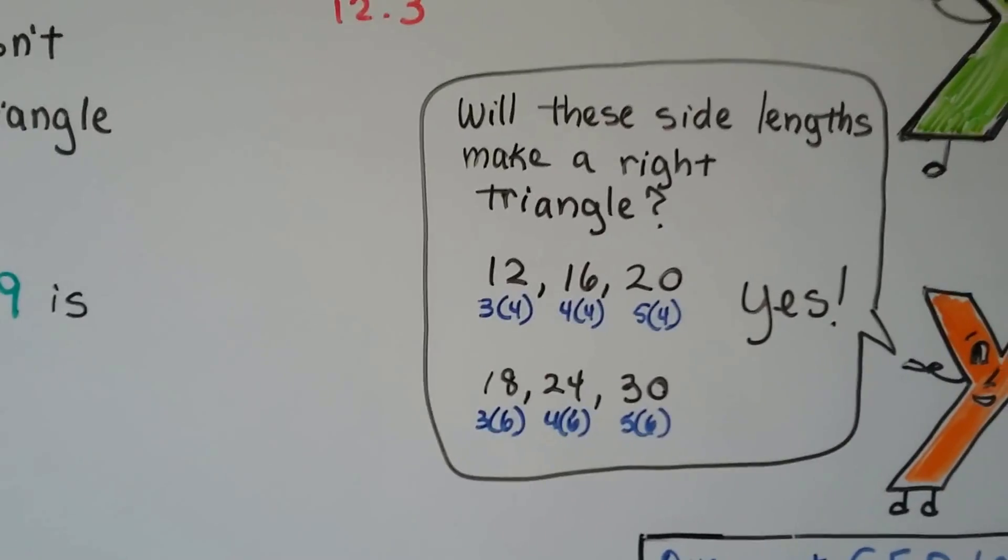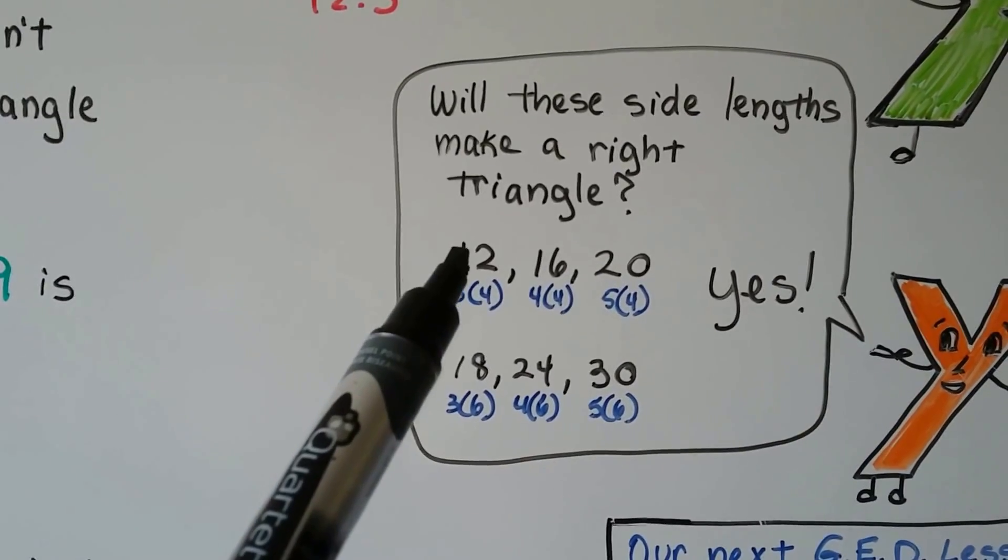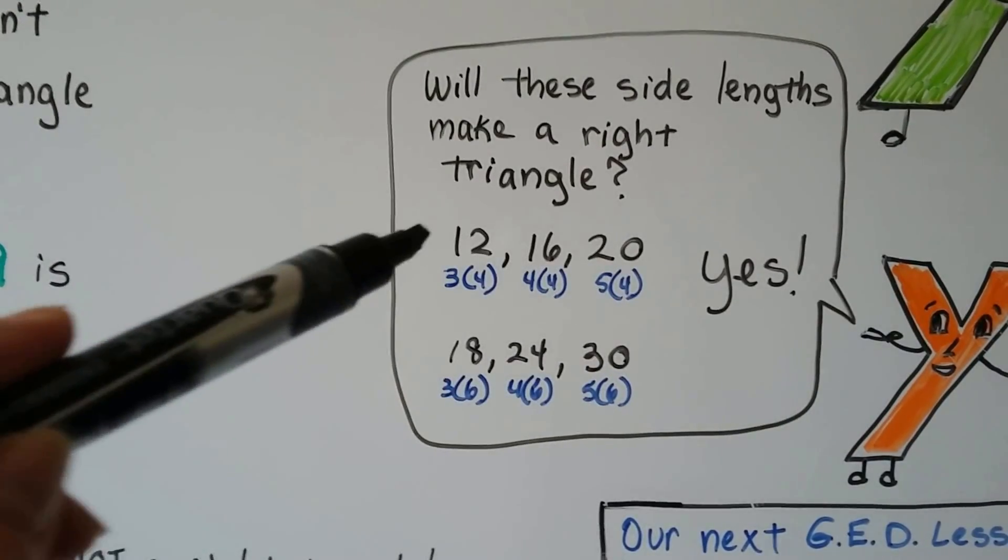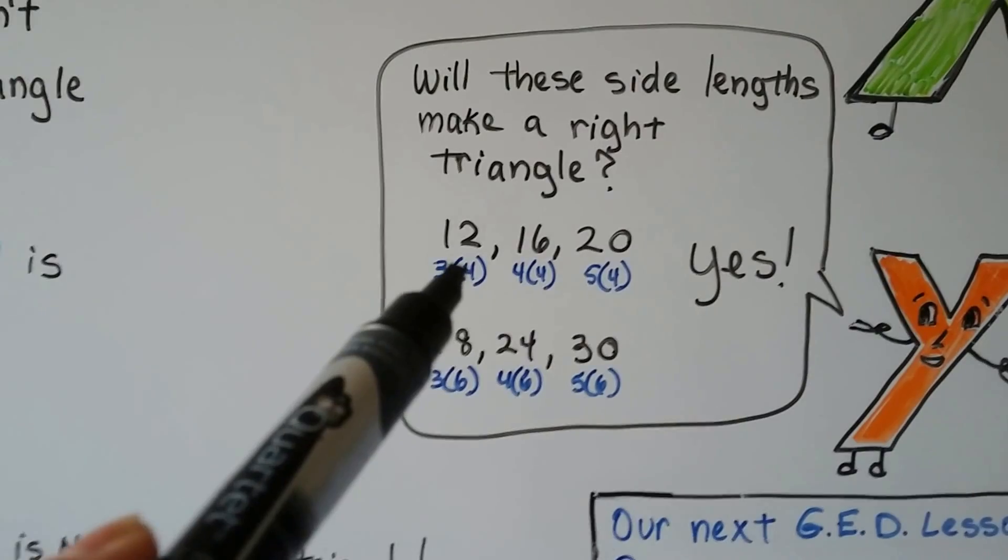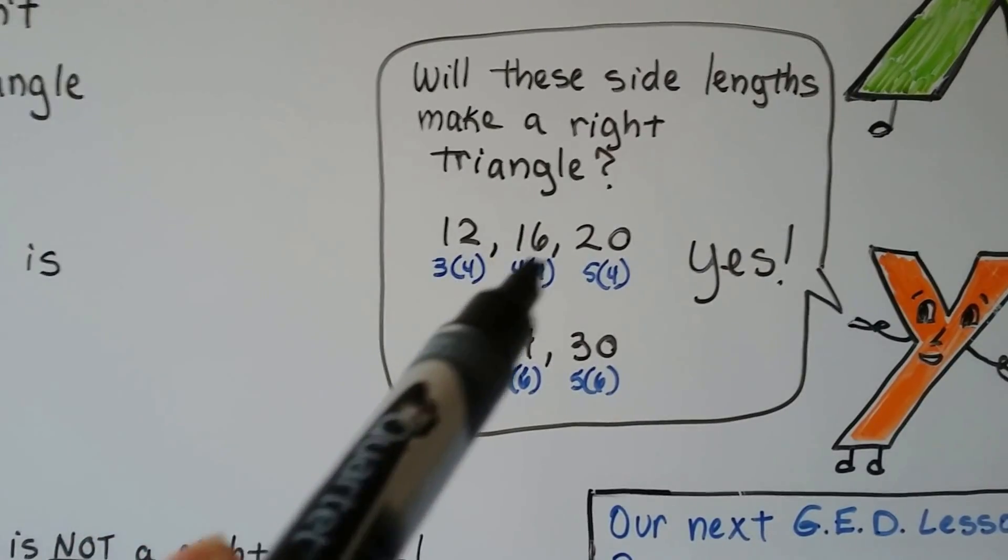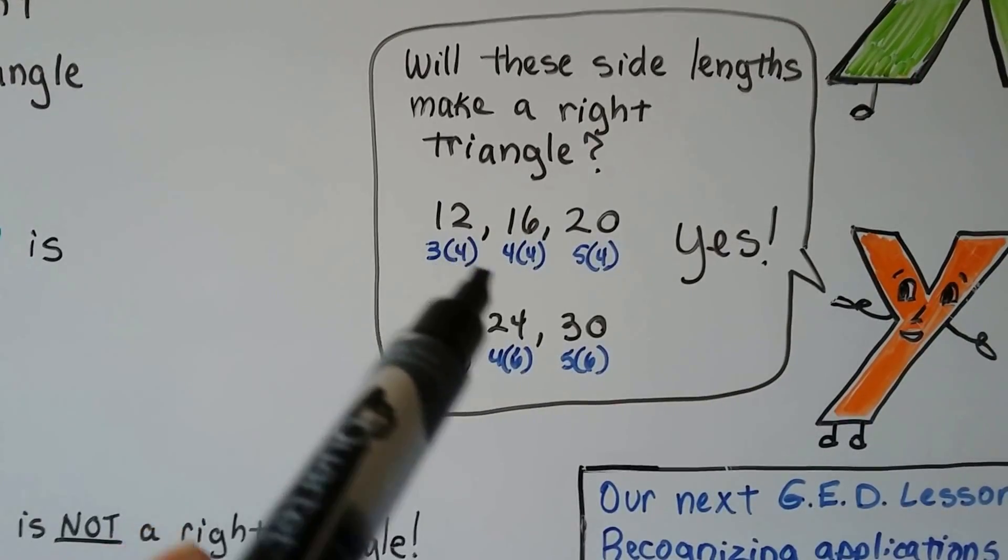Now, you're going to see things like, will these side lengths make a right triangle? And you'll be given three numbers, like 12, 16, and 20. So, ask yourself, thinking of the 3, 4, 5, 12 is 3 times 4, 16 is 4 times 4, and 20 is 5 times 4. So, they all have to be multiplied by the same number. See? 4, 4, 4, the 3, 4, 5. So, yeah, that works.